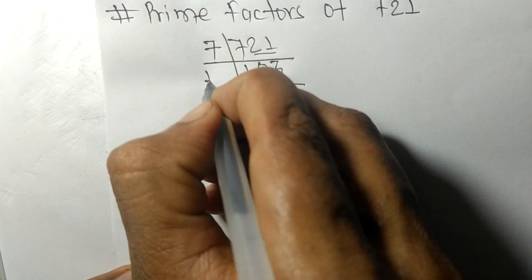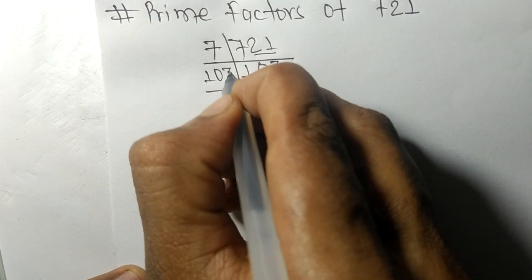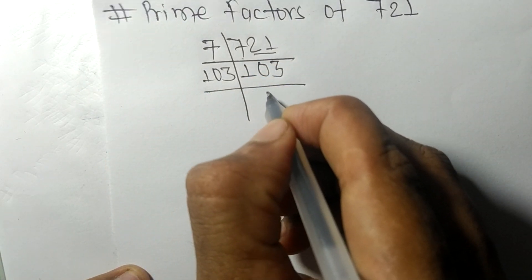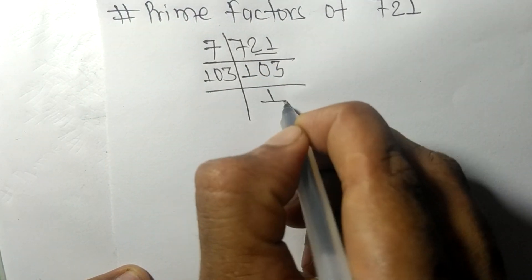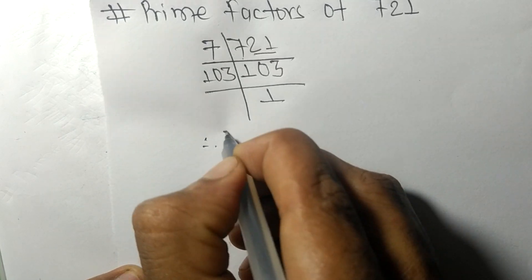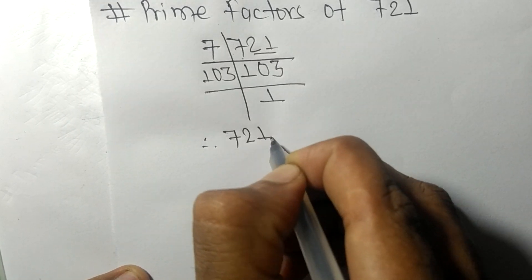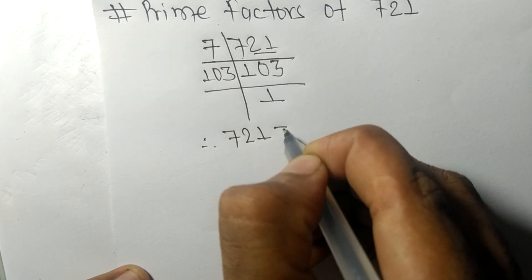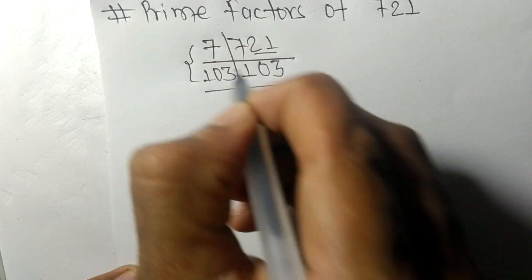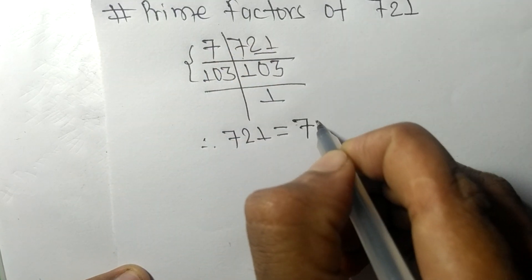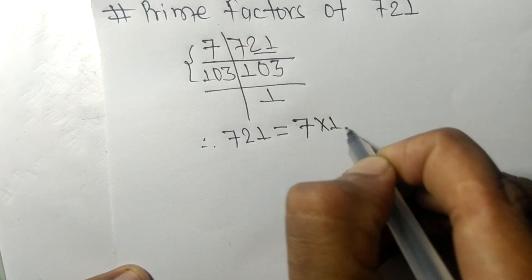...by 103 itself, and we get 1 here. Therefore 721 equals — from this side it is 7 times...